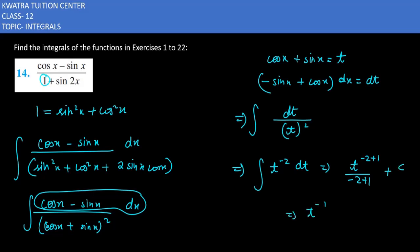t to the power minus 1, minus 1, plus a constant. So substituting t equals cos x plus sin x, this is your answer for the 14th one.